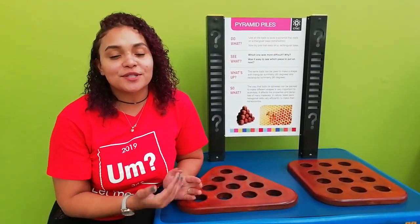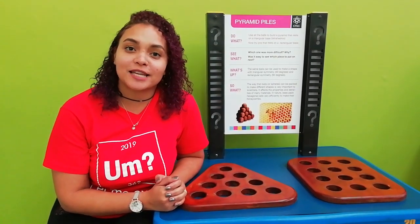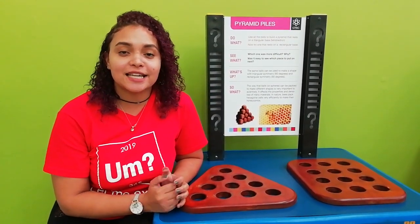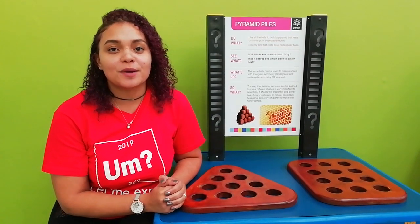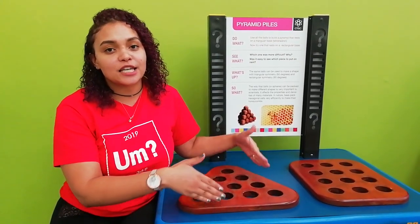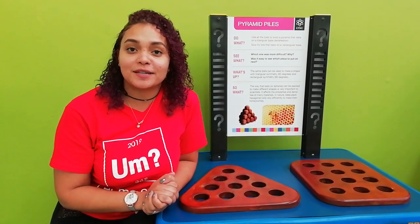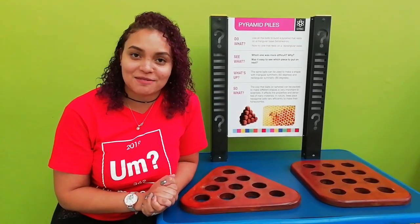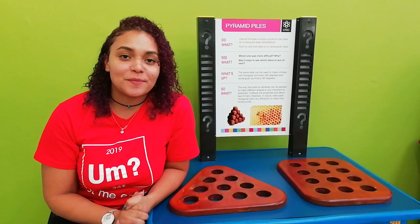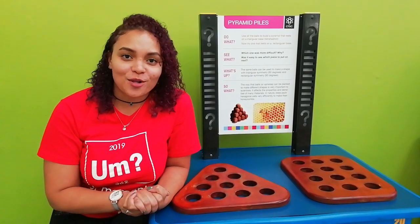To understand how to solve the Pyramid Piles, you need to understand what a pyramid actually looks like. A pyramid is a three-dimensional shape consisting of a base, and the sides slope up to a common point at the top known as the apex. So now that we know what a pyramid actually looks like, we can get into solving it.